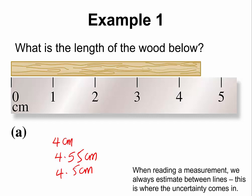Let us examine the ruler, because anytime you want to make a measurement, the very first thing you want to do is understand the instrument you are using. On this ruler, the calibration is such that we have 0, 1, 2, 3 — we do not have any other calibration. For example, between 1 and 2, we simply go from 1 to 2, from 2 to 3, from 3 to 4.